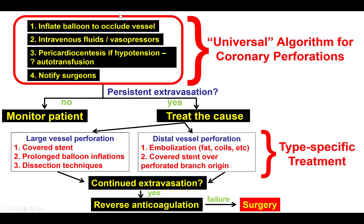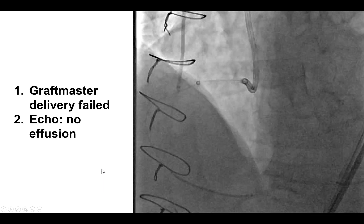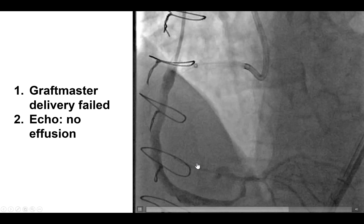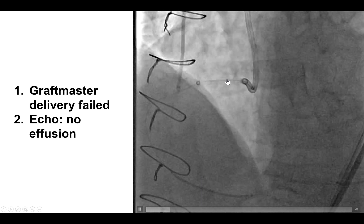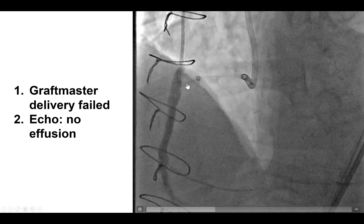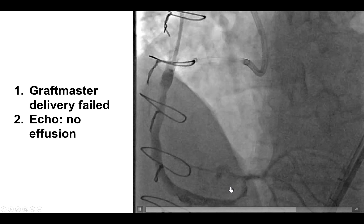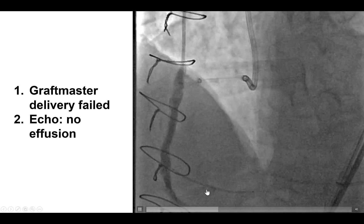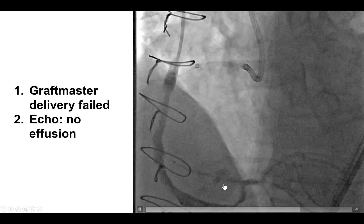The first step for any perforation is to inflate a balloon to occlude the vessel. And then, for large vessel perforations, a covered stent is usually the way to go, although sometimes prolonged balloon inflations can be used if a covered stent cannot be delivered, or sometimes dissection techniques can be used. Here we did the balloon inflation. We tried for a while to advance a Graftmaster covered stent — this was before the PK Papyrus was available — but this could not be delivered. We did an emergency echo that did not show any effusion, but there was still some extravasation in the distal right coronary artery.